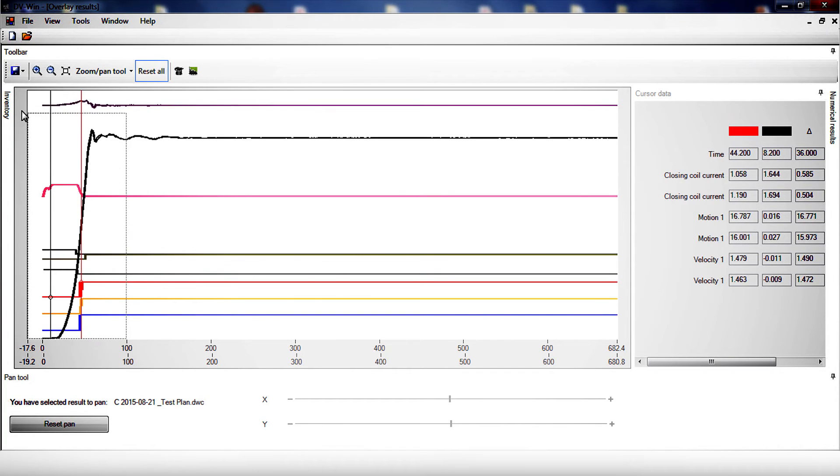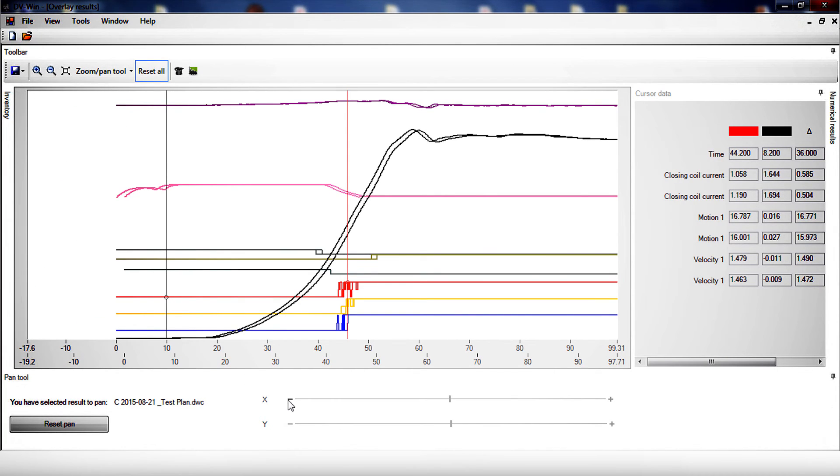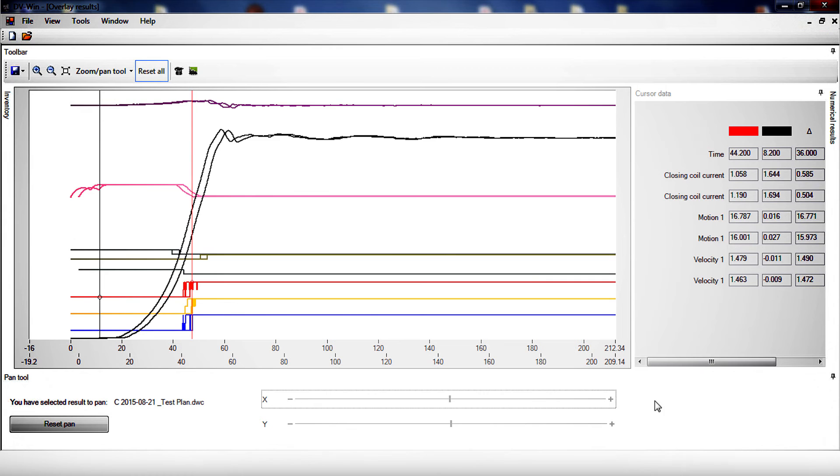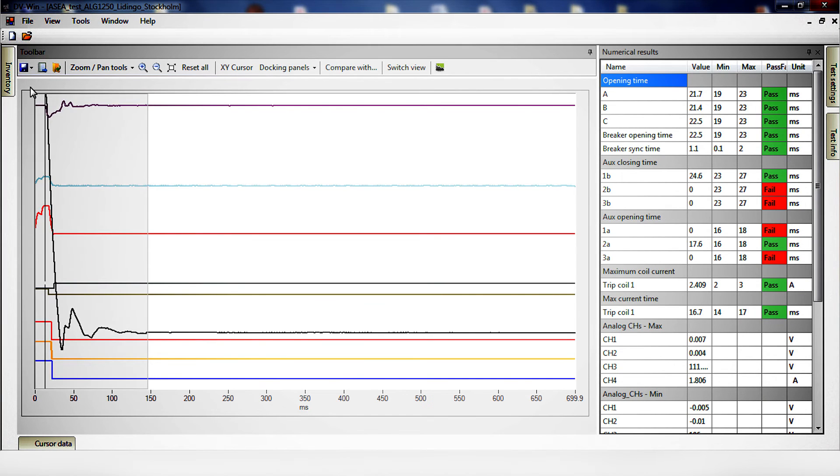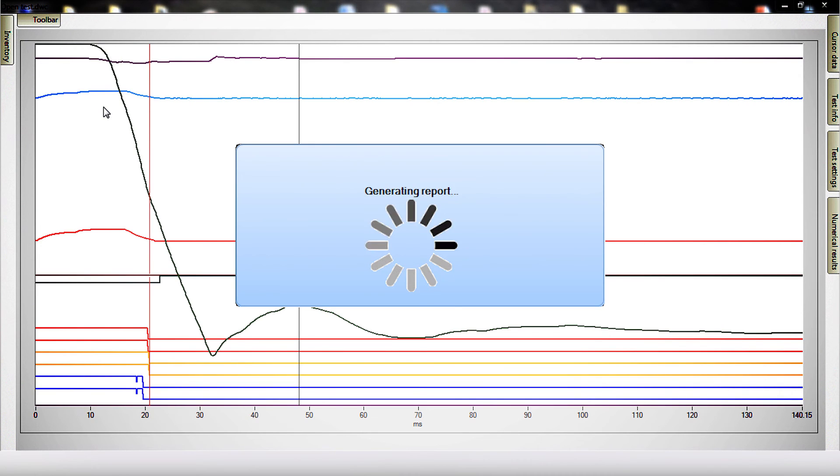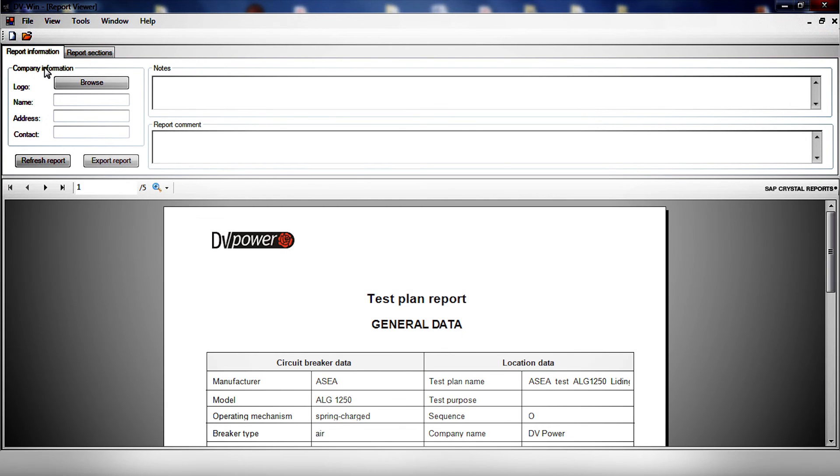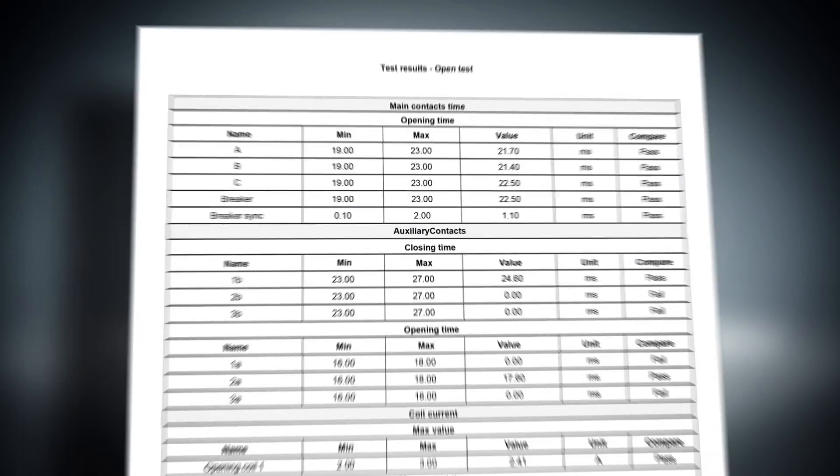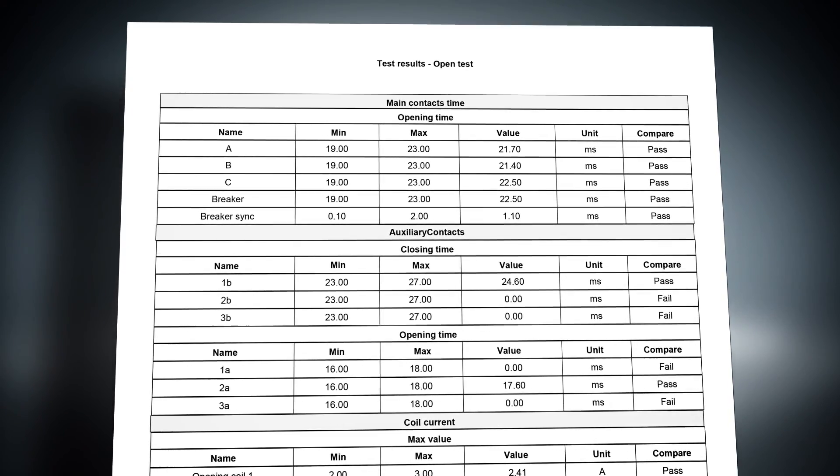An essential part of circuit breaker condition assessment is the ability to compare the latest test results with results obtained in previous tests. Measured values are compared with limits specified by the manufacturer. The obtained fingerprint can be used at a later stage as a reference for subsequent measurements. In order to provide accurate comparison, tests need to be performed using identical test parameters. Any deviation and change in test results may indicate circuit breaker condition deterioration. This ability is supported by DV-WIN test plans and graph overlay feature. The final stage of a circuit breaker maintenance process is the DV-WIN providing analytical tools and customized report creation.